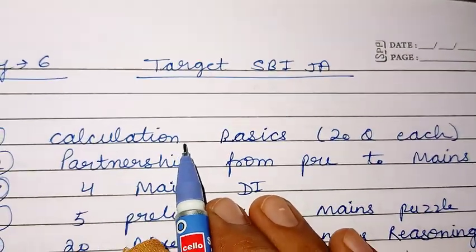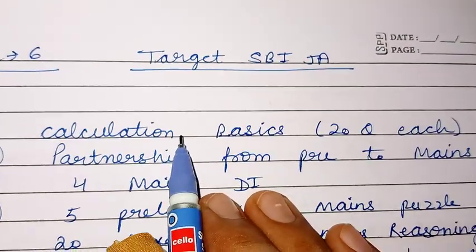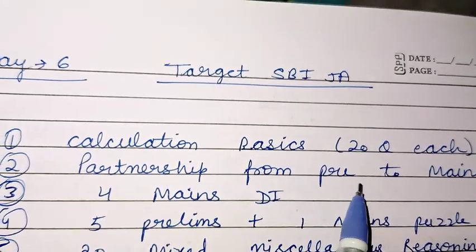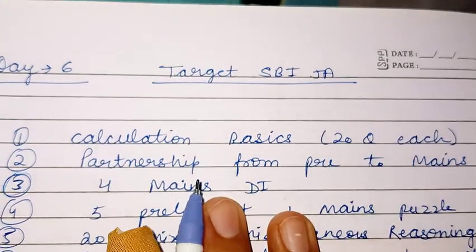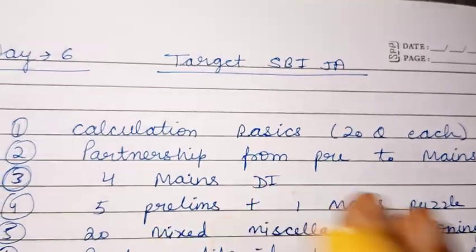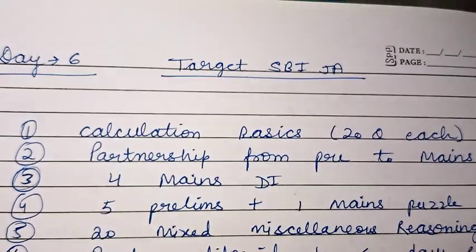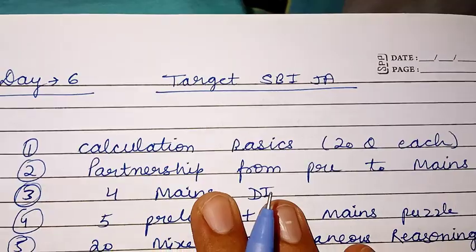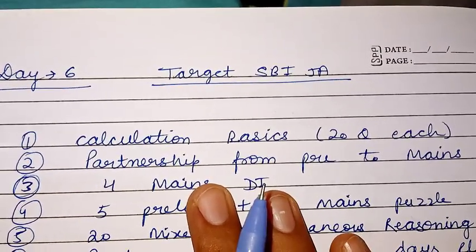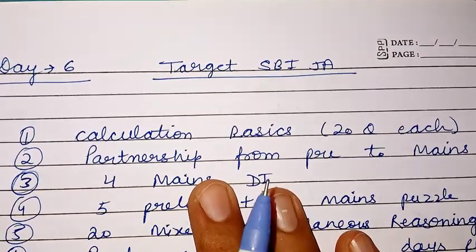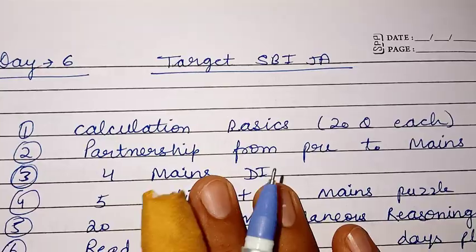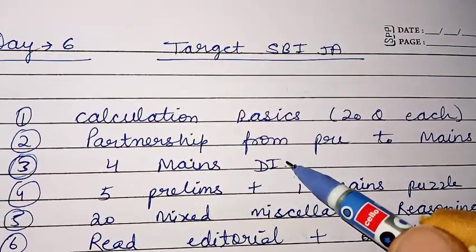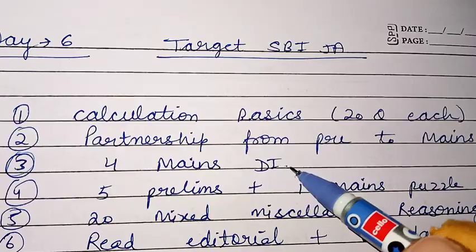First, there are calculation basics — you will solve 20 questions each. Then there is the partnership chapter and you will take it from prelims to mains. If you are a beginner, go at your own pace. If you are already a preparing candidate, you will cover partnership tomorrow, and after that you will solve four mains-level DIs.